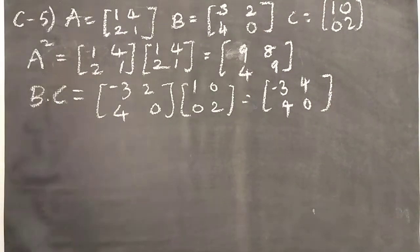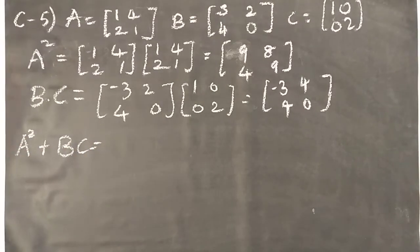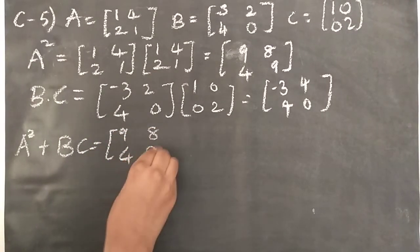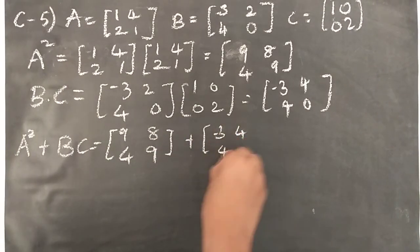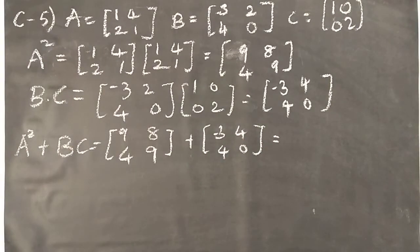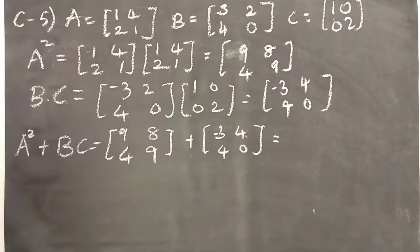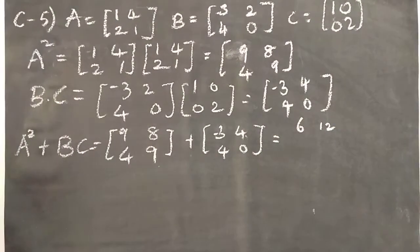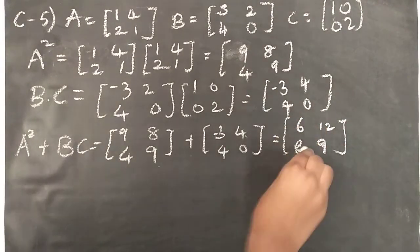Now A square plus B, C. The value is going to be, so these two values are there, now just put it there. 9, 8, 4, 9 plus minus 3, 4, 4, 0. So now normal addition how we used to do: 9 plus minus 3, 8 plus 4, 4 plus 4, 9 plus 0. So answer is 6, 12, 8, 9.